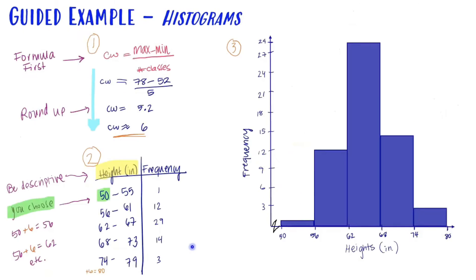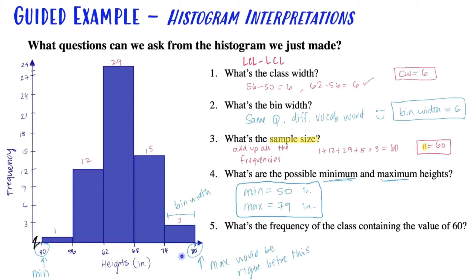Remember the frequency distribution that we had on the previous page? 79. Even though we see 80 here because this is the next lower class limit. This would be, if we went out one more bin, that would be the lower class limit of the next bin. So the max would be the number right before that. So again, that's only for a histogram if these numbers were lower class limits.